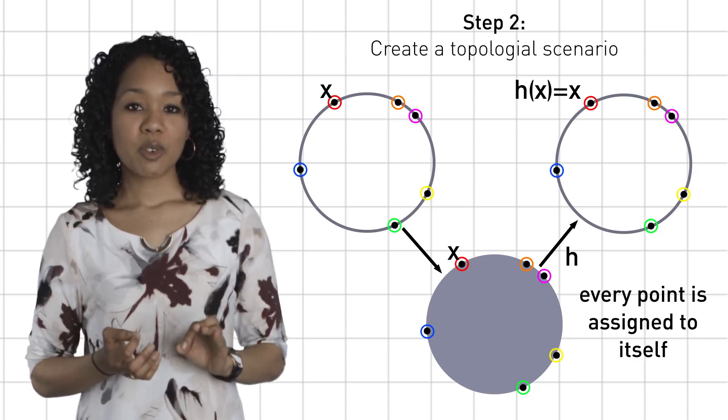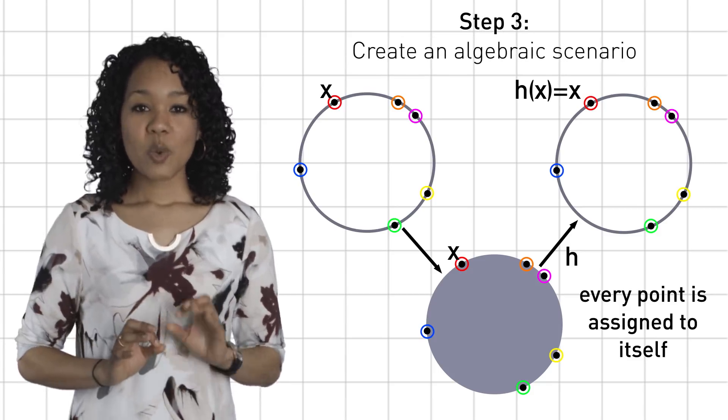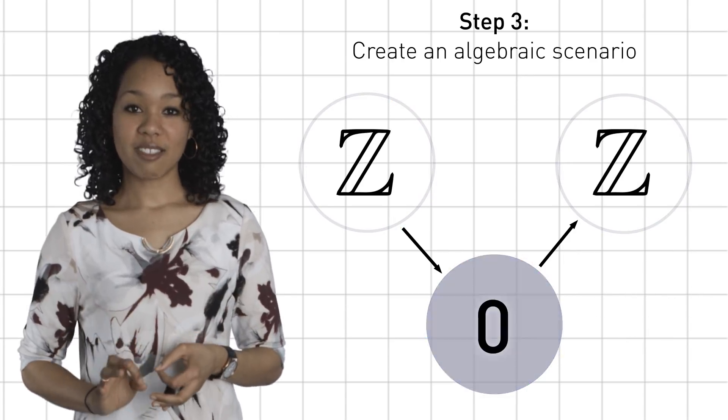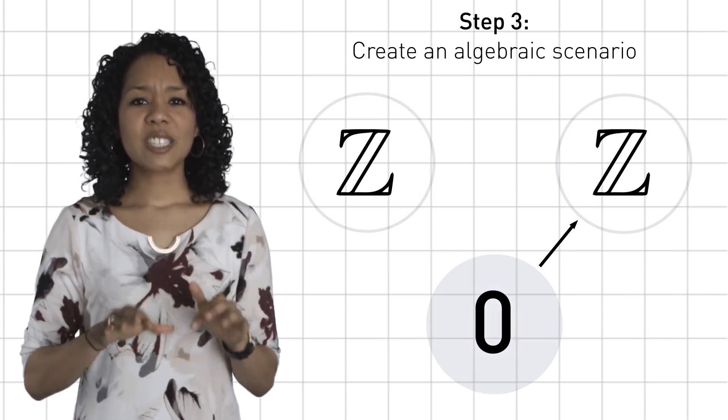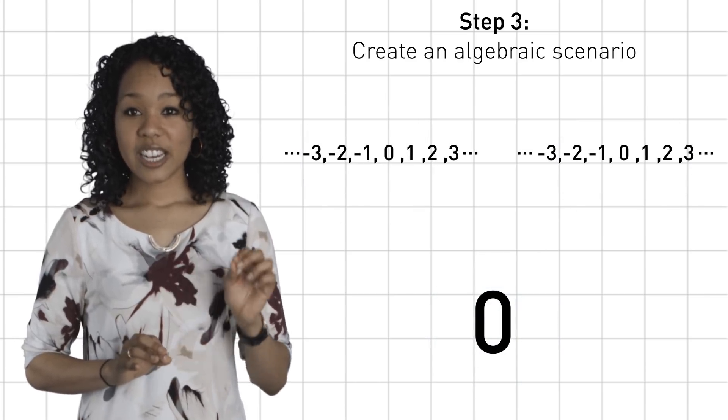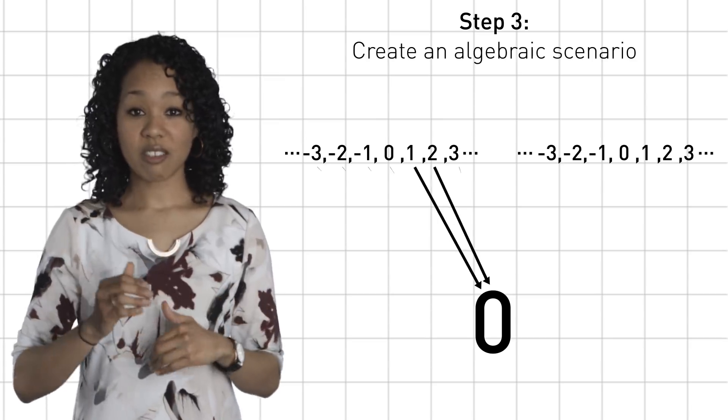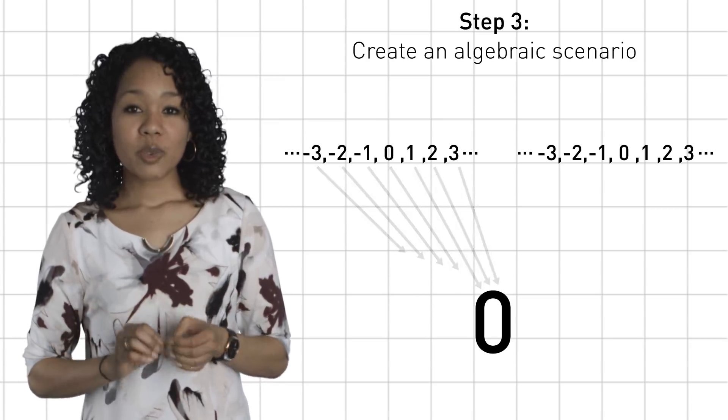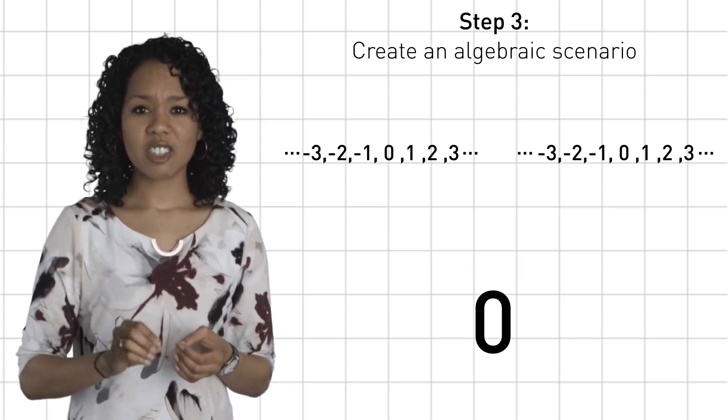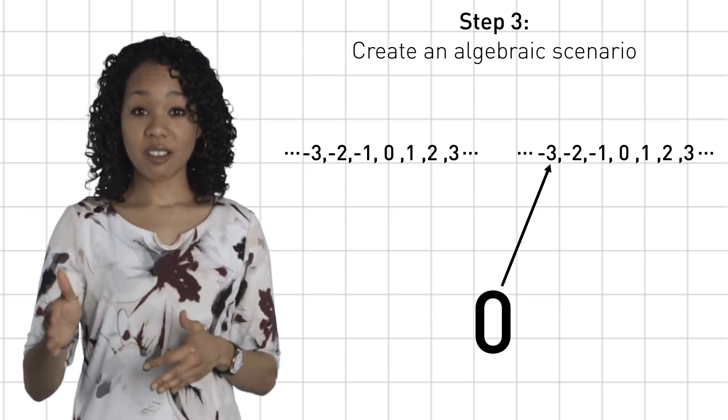Next, let's use the portal we introduced earlier to obtain the algebraic analog. We can replace the circles by the integers and the disk by the number 0. Now here's a very simple observation. Any function that assigns to each integer the number 0, so 1 goes to 0, 2 goes to 0, and so on, composed with a function that assigns 0 to exactly 1 integer, like -3, clearly does not assign each integer to itself. For example, 1 will go to -3, which is not 1.